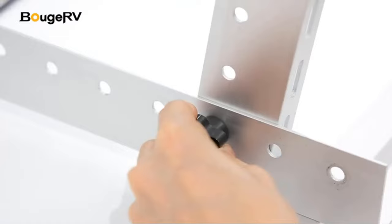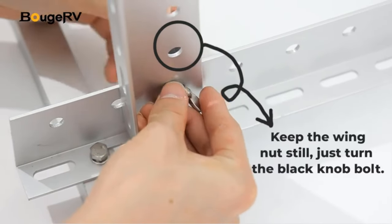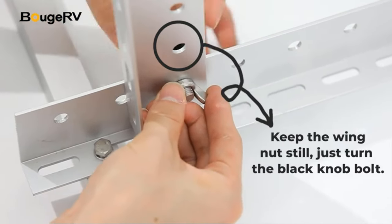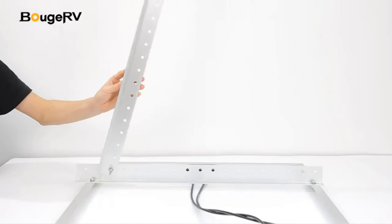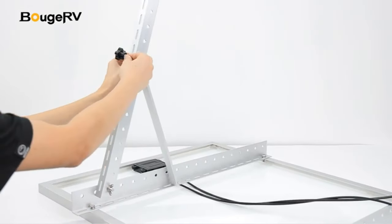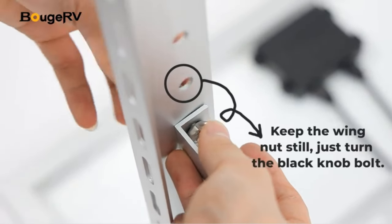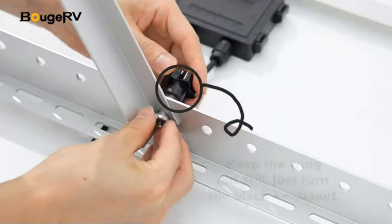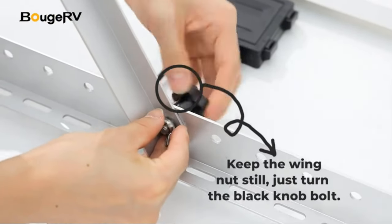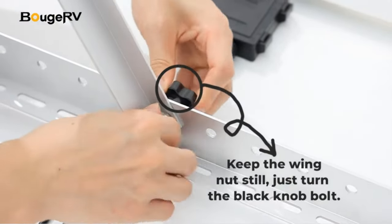Featuring a side-of-pole design, this mount allows for easy attachment to poles, making it suitable for various applications where traditional roof or ground mounts may not be feasible or desirable. Whether it's for remote cabins, RVs, boats, or other off-grid setups, the side-of-pole mount offers flexibility in positioning solar panels to harness sunlight effectively.